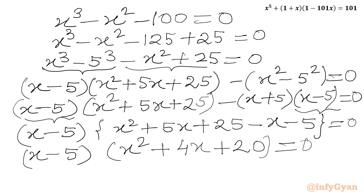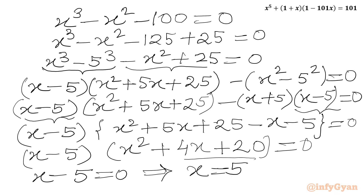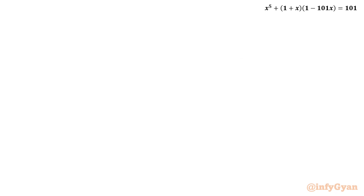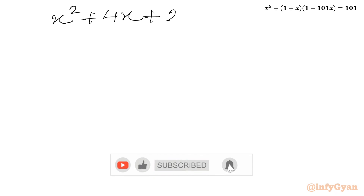From the zero product rule I will write two equations. Either x minus 5 equals 0, so from here we get x equal to 5, our first real solution, or this quadratic expression equals 0: x square plus 4x plus 20 equal to 0.